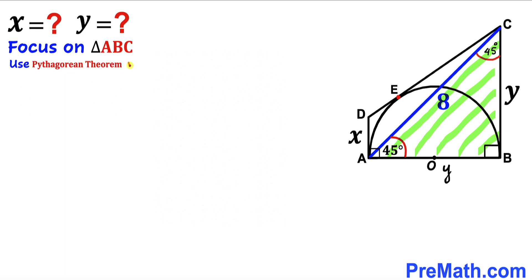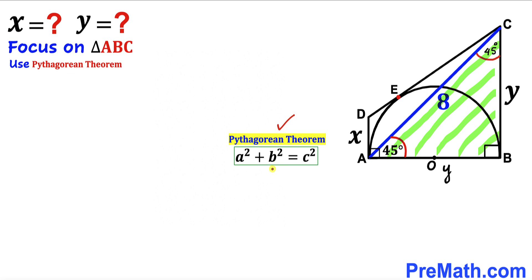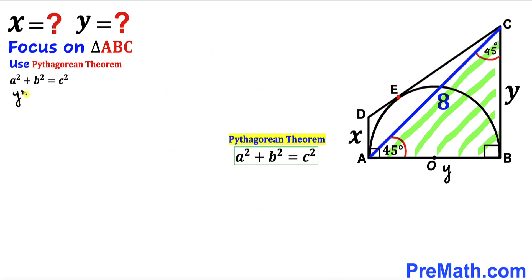If BC is Y, then AB is Y as well. We apply the Pythagorean theorem on this triangle to find Y. Our hypotenuse is 8 units and our two legs are both Y. Filling in the formula: Y² + Y² = 8².